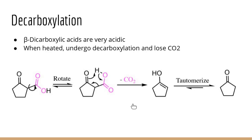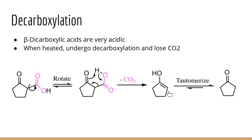Beta-dicarboxylic acids are very acidic and, when attached to another ketone, readily lose CO2 under heat conditions via decarboxylation. Protonating the oxygen initiates a proton shuffle to form an enol, and once the carboxylic acid is kicked off it can tautomerize to a ketone. So if you want to get rid of a beta-keto acid, just heat it.